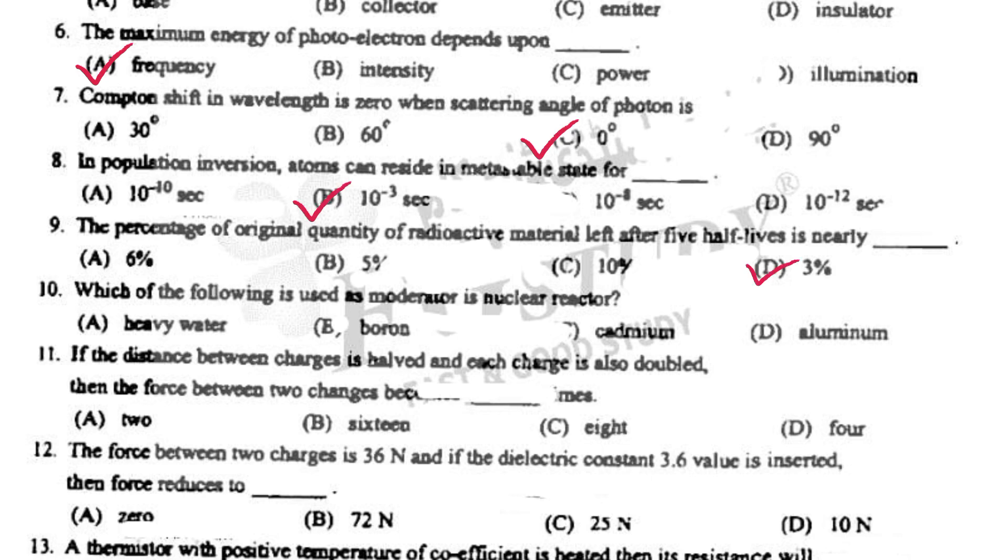Which of the following is used as moderator in nuclear reactor? Cadmium. If the distance between charges is halved and each charge is also doubled, then the force between two charges becomes 4 times.